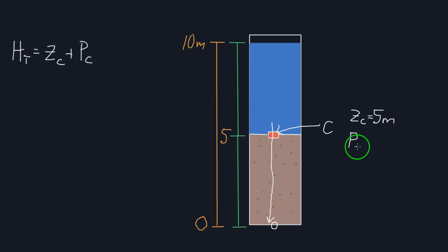Now let's look at our pressure head at C. Well, how much water is on top of our measuring point there at C? It's 5 meters.